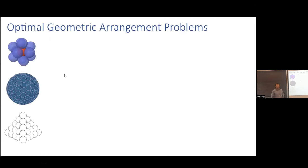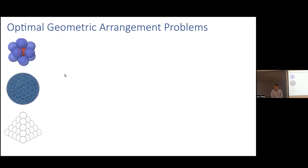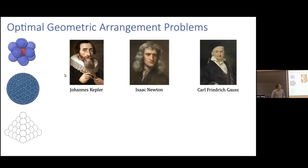Optimal geometric arrangement problems are some of the most classical problems in mathematics. They include the kissing number problem — how many balls can you put around a center ball of the same size so that no two overlap — the spherical codes problem, and the sphere packing problem: what's the optimal way to pack unit spheres in a specific dimension?